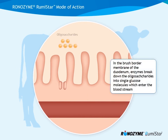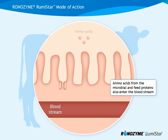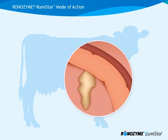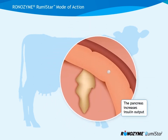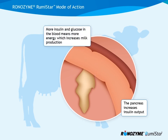In the brush border membrane of the duodenum, enzymes break down the oligosaccharides into single glucose molecules which enter the bloodstream. Amino acids from the microbial and feed proteins also enter the bloodstream. The pancreas increases insulin output, and more insulin and glucose in the blood means more energy, which increases milk production.